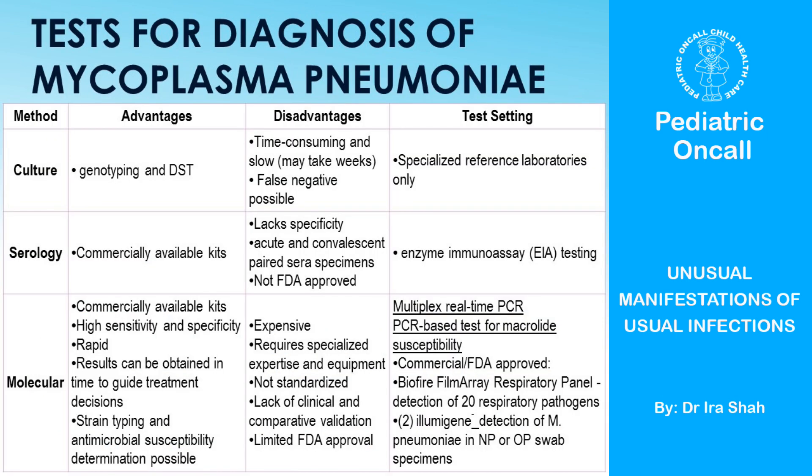How do we pick up mycoplasma? If you look at what the CDC says — culture is not possible; it's only in research labs. Serology is what we normally do and we usually send Mycoplasma IgM. But remember, Mycoplasma IgM can remain positive for three months. Ideally you're supposed to do an acute and a convalescent sample, but by the time you get the convalescent sample the patient has already recovered, so there's no point doing the serology. Molecular tests are available, but when you send for molecular tests, a lot of PCR labs have come up — at least in Mumbai and other parts of the country — and you really need to know whether the PCR test you are sending is validated or not. For mycoplasma, there are only two tests validated and approved by the US FDA: FilmArray and Illumigene. If you use other tests, you may pick up a lot of false positives and false negatives.